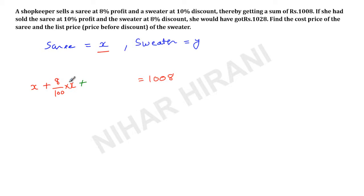So this is my collection for the saree. For sweater, it will be Y minus because discount, so he is charging less, so minus 10% of Y. He will charge less, 10 over 100 times Y.